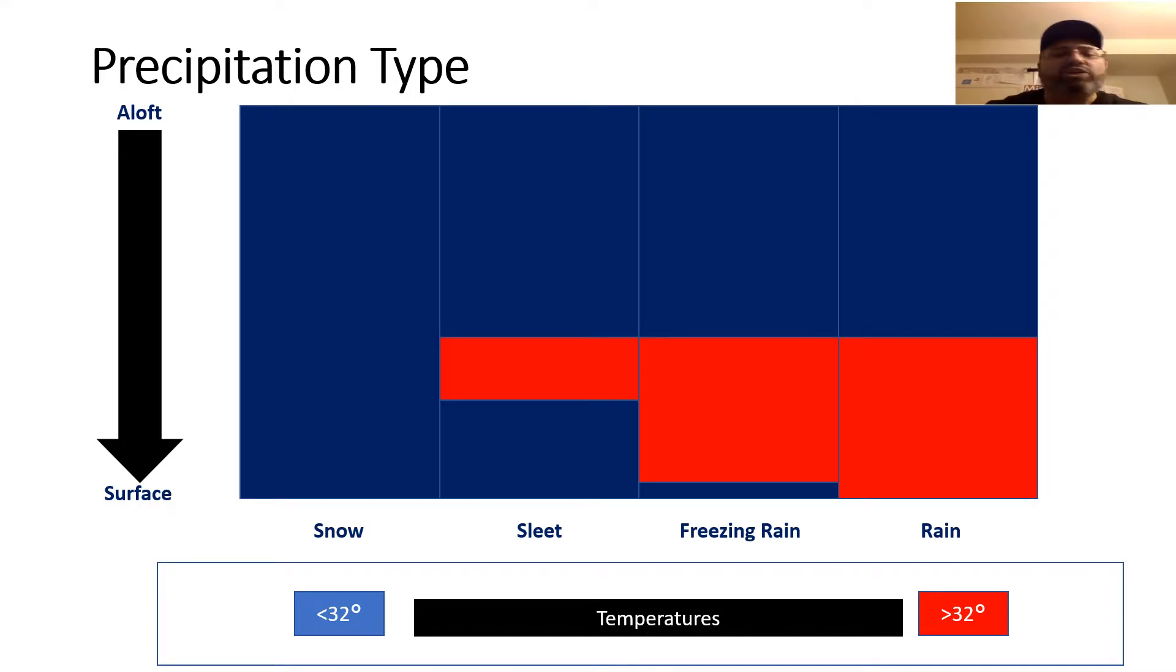Sleet is not hail. A lot of people use them interchangeably, but it's not. Hail happens in the summertime when you have thunderstorms with strong updrafts. In winter time, when a snowflake melts at 5,500 feet or so and then refreezes before it hits the ground, we call that sleet.